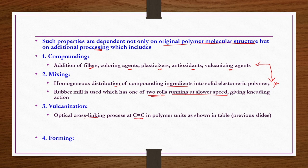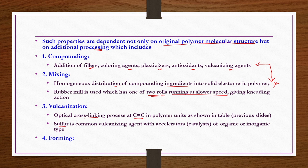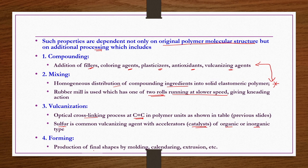Vulcanization refers to the optical crosslinking process that occurs at double bonds in polymer units. Sulfur is the most common vulcanizing agent, often used with organic or inorganic accelerators or catalysts. Sometimes additional monomers are also added. Forming is the production of final shapes by processes like molding, calendaring, and extrusion. That covers the basic rubber industry concepts, chemical structures, properties, and additional processes needed to get the final rubber product.